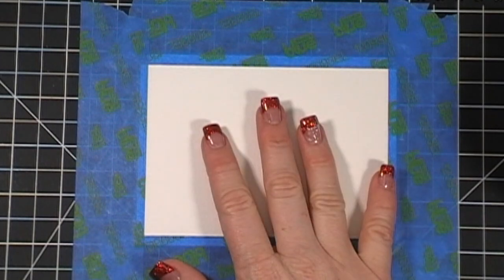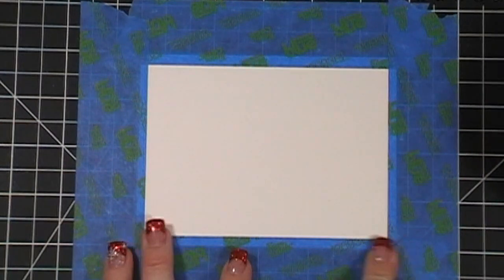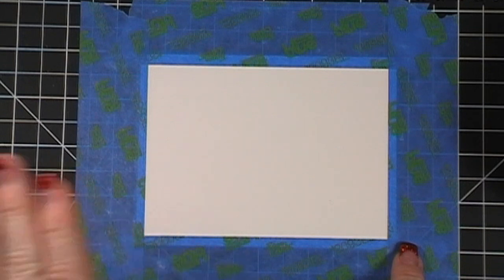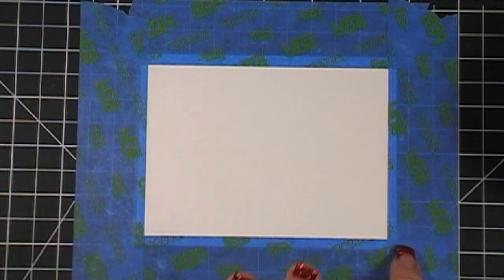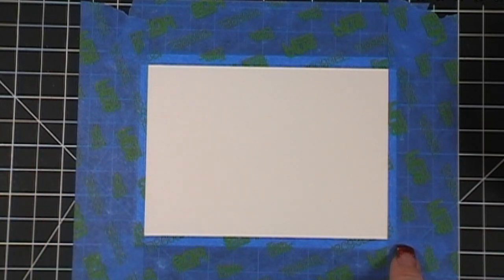So we have a piece of watercolor paper here and we have our tape down around the edges, just like we did in Friday's video. If you haven't seen Friday's video, I go over this technique in more detail, so you might want to visit that video first and then watch this one.